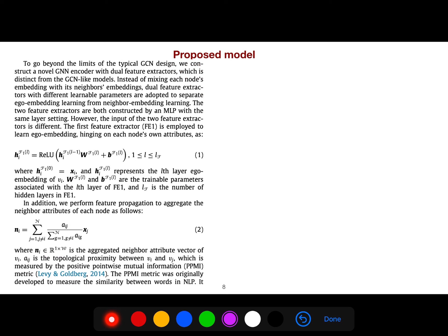The proposed model uses a first feature extractor employed to learn ego embedding hinging on each node's own attributes, so there is an ego embedding. To go beyond the limits of typical graph convolutional networks, we construct a novel graph neural network encoder with dual feature extractors which is distinct from GCN-like models. Instead of mixing each node's embedding with its neighbors' embedding, dual feature extractors with different learnable parameters are adopted to separate ego embedding learning from neighbor embedding learning. The two feature extractors are both constructed by a multi-layer perceptron with the same layer setting. However, the input of the two feature extractors is different.